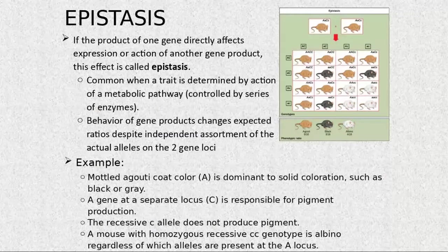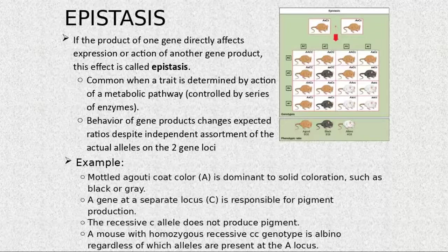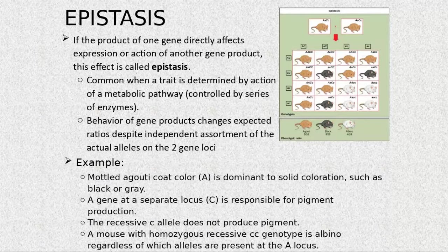The gene expression of the C locus affects the gene for fur color at the A locus. So if A is paired with homozygous cc, it is not going to produce any pigmentation. This is epistasis.